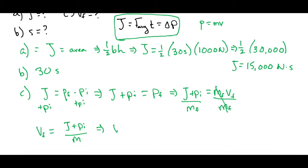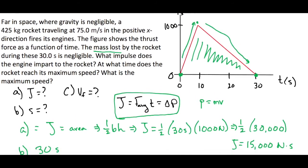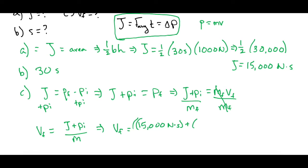Let's plug in the values. The final velocity equals 15,000 newton seconds plus 425 kilograms times 75 meters per second, all divided by 425 kilograms.